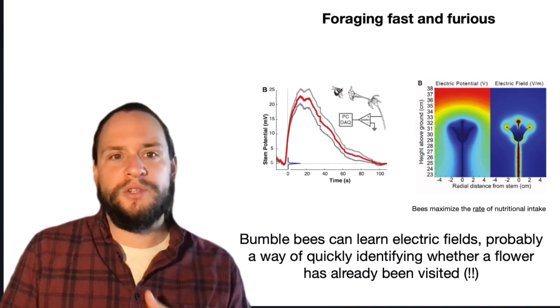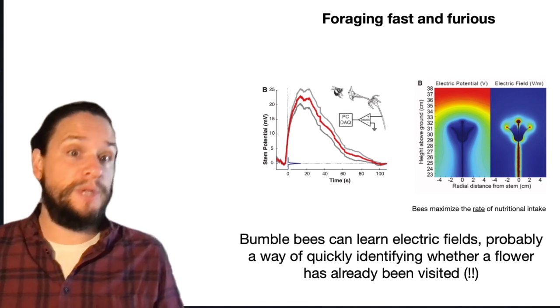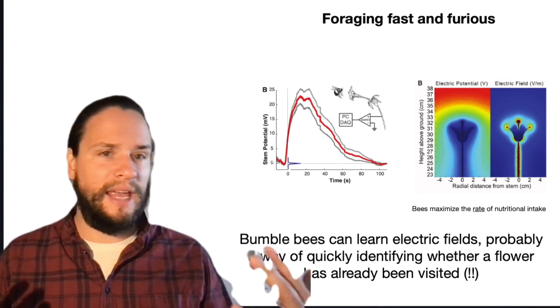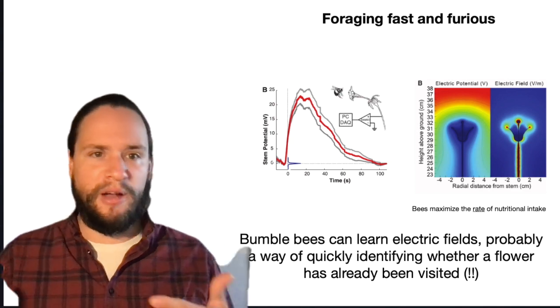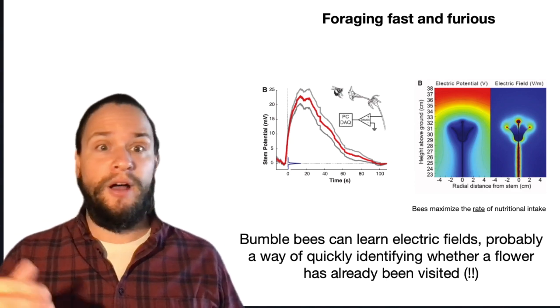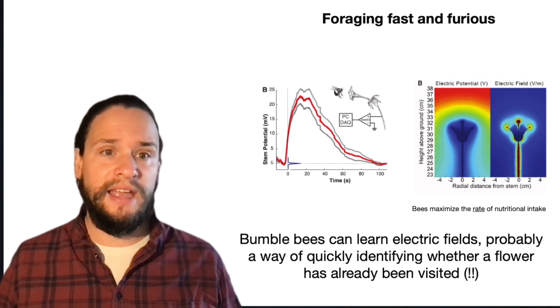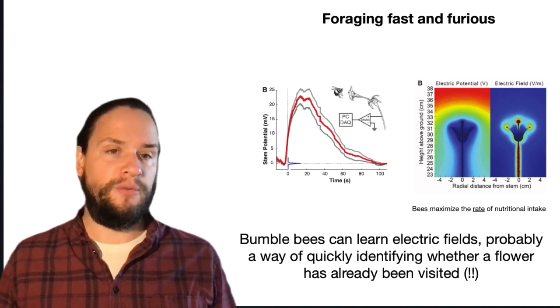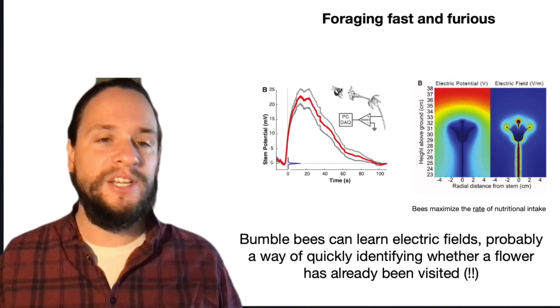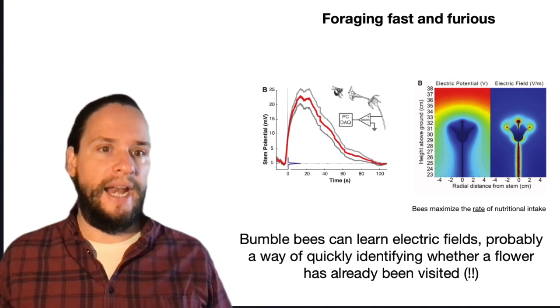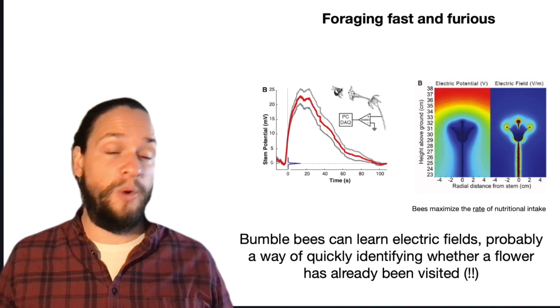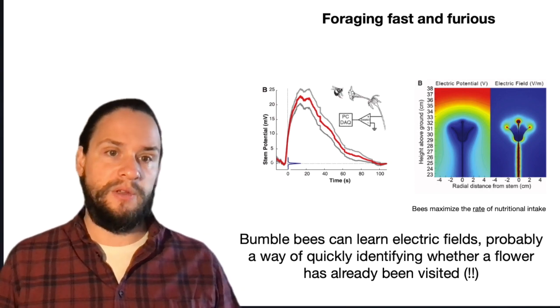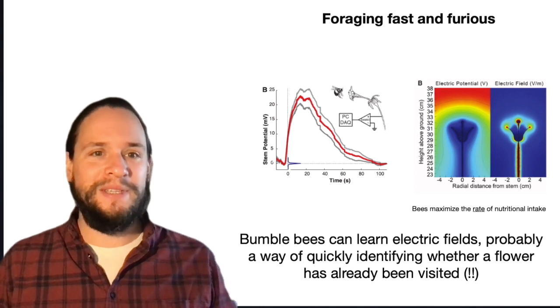And so that just sort of highlights that what bees really care about is the rate at which they're taking in food. They want to make all, they're going from flower to flower, spending seconds there, you know, hundreds, thousands of times each day. And so there's a premium on making really fast decisions. And so a lot of their foraging behavior reflects adaptations to that end, to try to forage as quickly and as efficiently as possible. So one of my favorite examples of those kinds of adaptations are that bumblebees can actually sense electric fields.